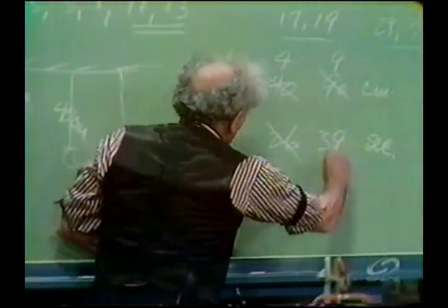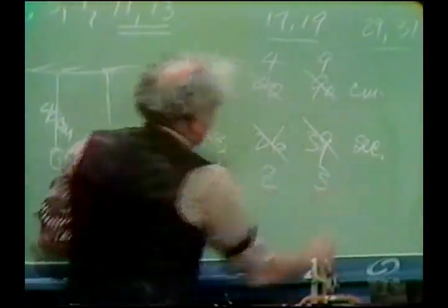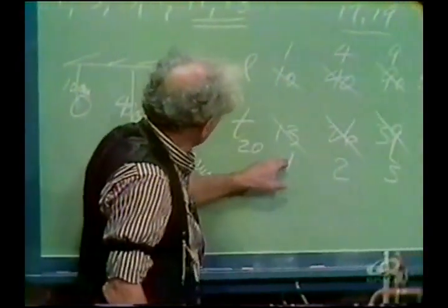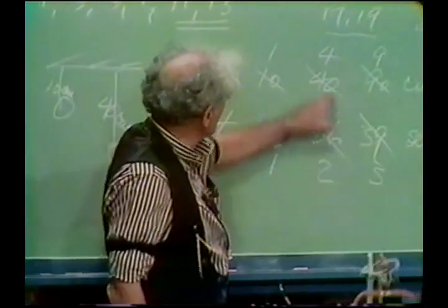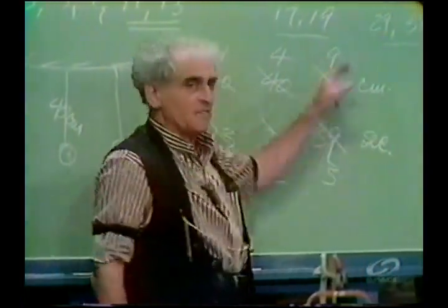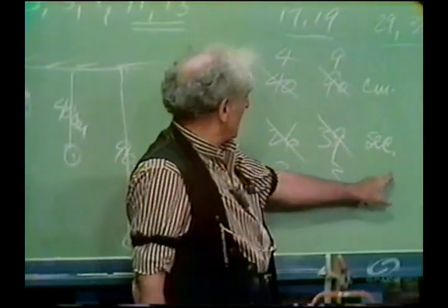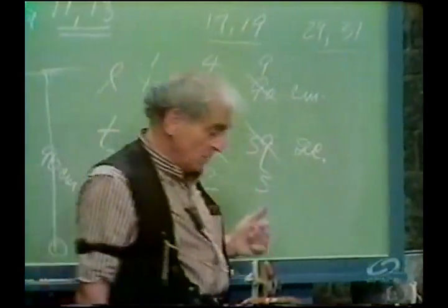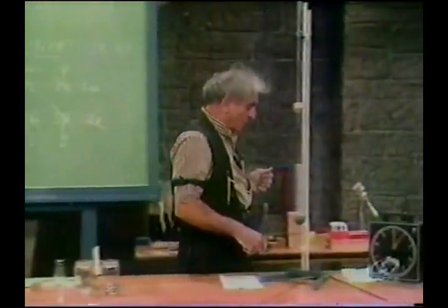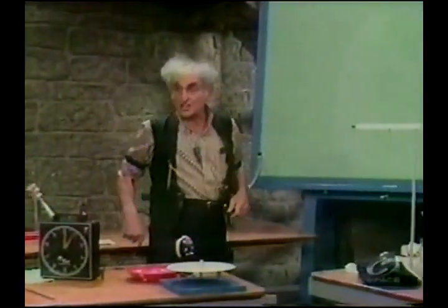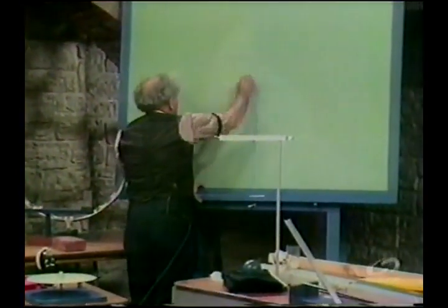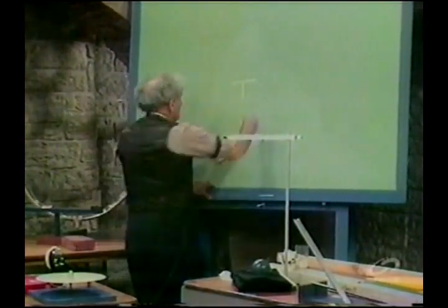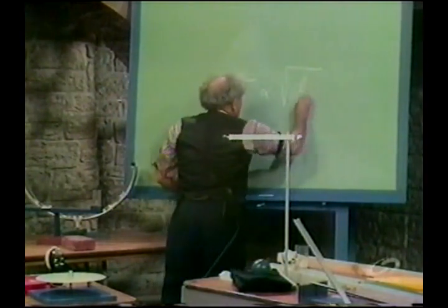These numbers — 10, 40, 90 — are in the ratio of 1 to 4 to 9. These numbers — 13, 26, 39 — are in the ratio of 1 to 2 to 3. And so you see that 1 is the square root of 1, 2 is the square root of 4, and 3 is the square root of 9. And whatever we'd get for another would be the square root of that, and so on. The period of the simple pendulum — the time for one oscillation or for 20 — is proportional to the square root of the length.